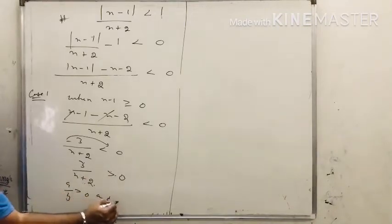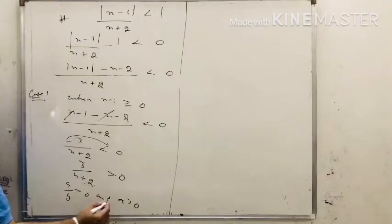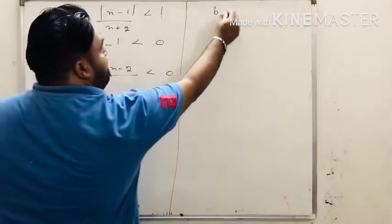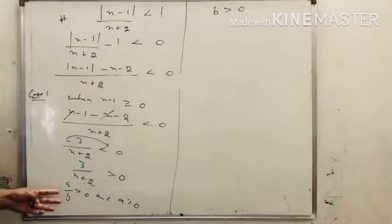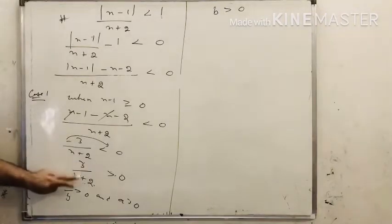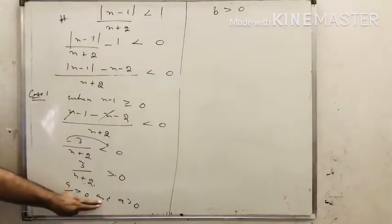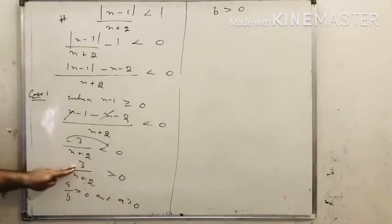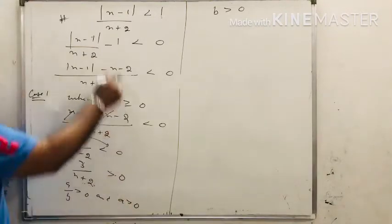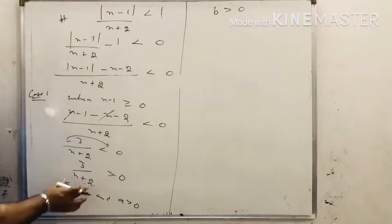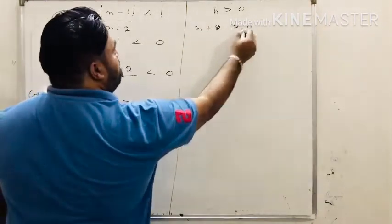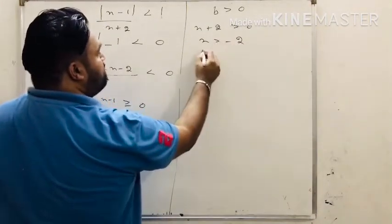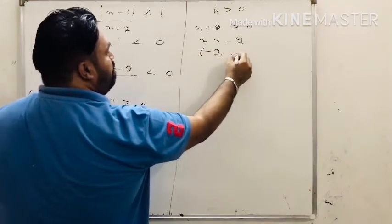Since 3 upon x plus 2 is greater than 0, and a is 3 which is greater than 0, by the a upon b rule, b must also be greater than 0. So x plus 2 greater than 0, meaning x greater than minus 2. The interval for case 1 is minus 2 to infinity.